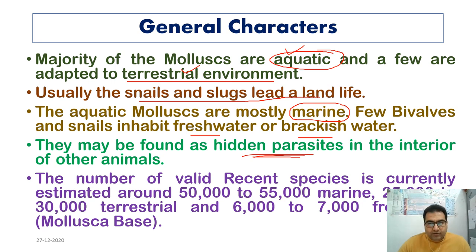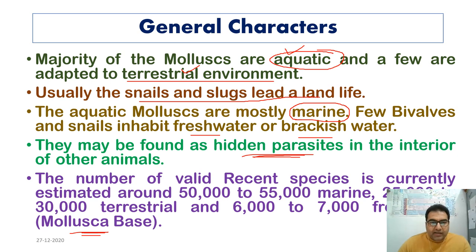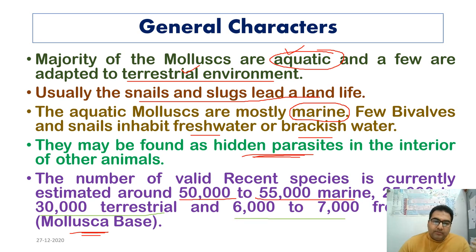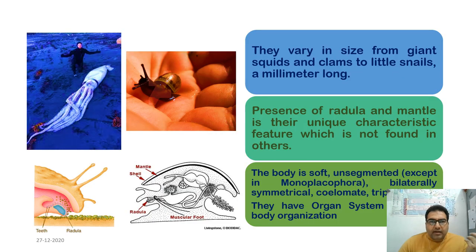According to the MolluscaBase website, the number of valid recent species is currently estimated at around 50,000 to 55,000 marine species, 25,000 to 30,000 terrestrial species, and about 6,000 to 7,000 freshwater species.